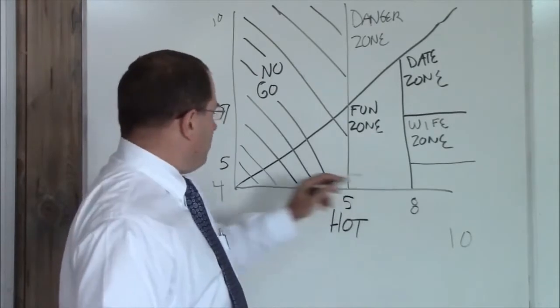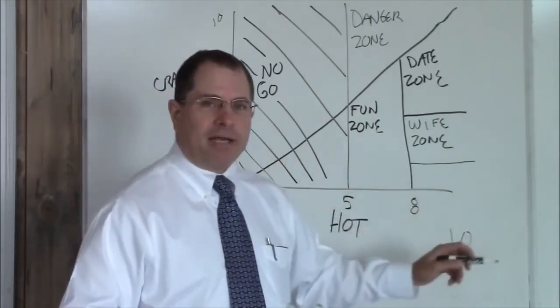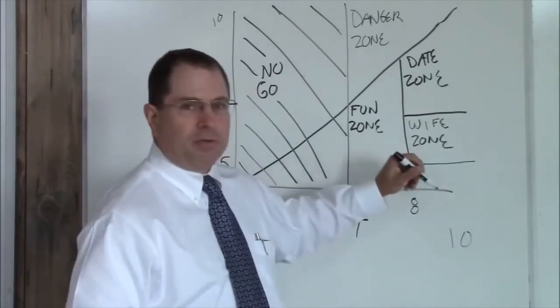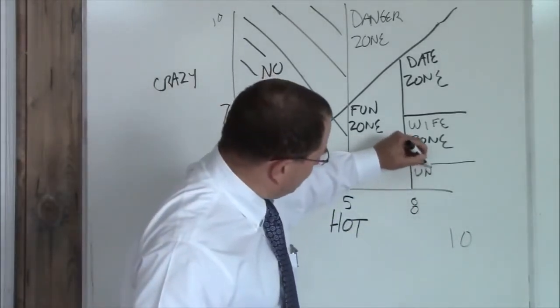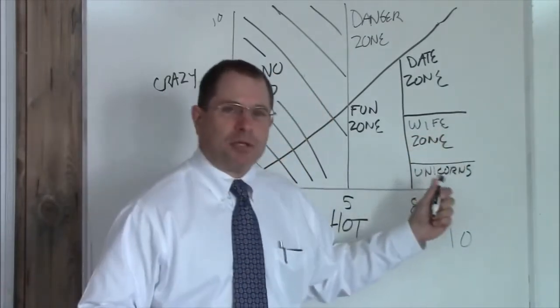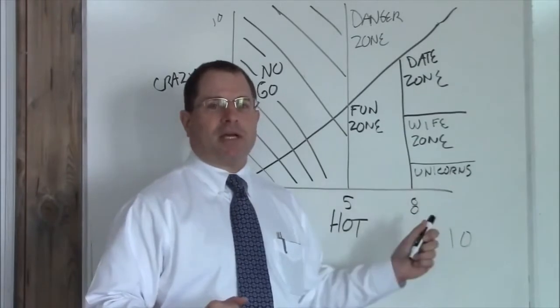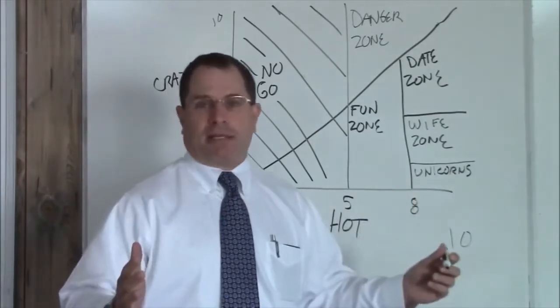Now, below a five crazy and above an eight hot, this is your unicorn zone. These things don't exist. If you find a unicorn, please capture it safely, keep it alive. We'd like to study it and maybe look at how to replicate that.